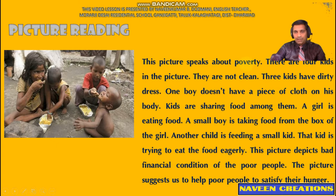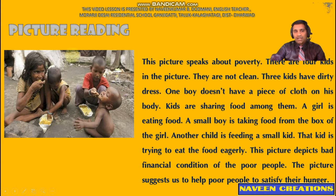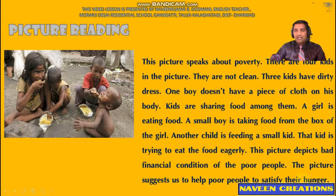This picture speaks about poverty. There are four kids in the picture. They are not clean — three kids have dirty dress and one boy doesn't have any cloth on his body. Kids are sharing food among them. A girl is eating food. A small boy is taking food from the girl's box. Another child is feeding a small kid. This picture depicts the bad financial condition of poor people. The picture suggests us to help poor people to satisfy their hunger. By making simple sentences like these, you can describe the picture and score full marks.